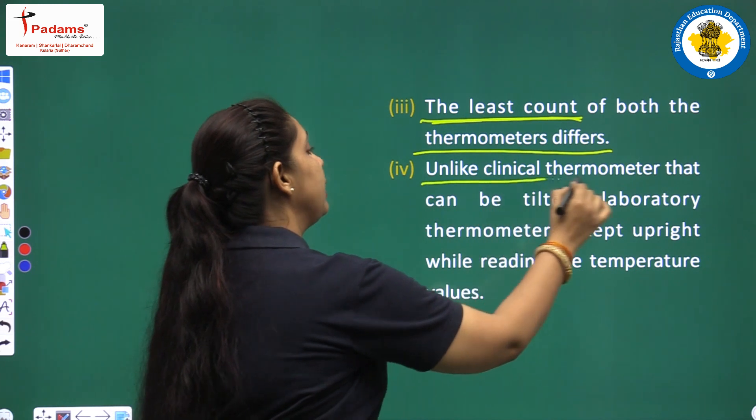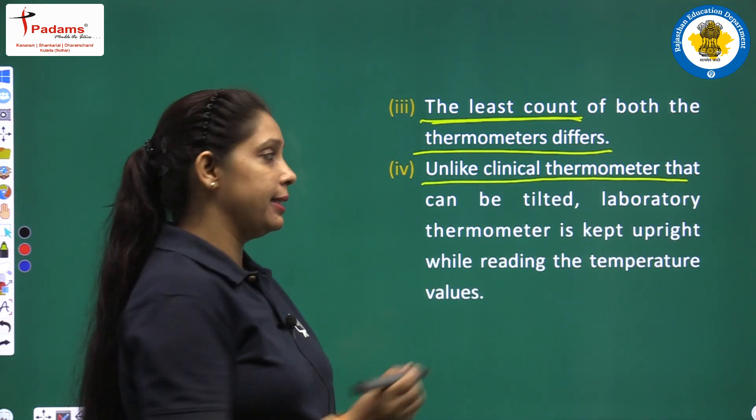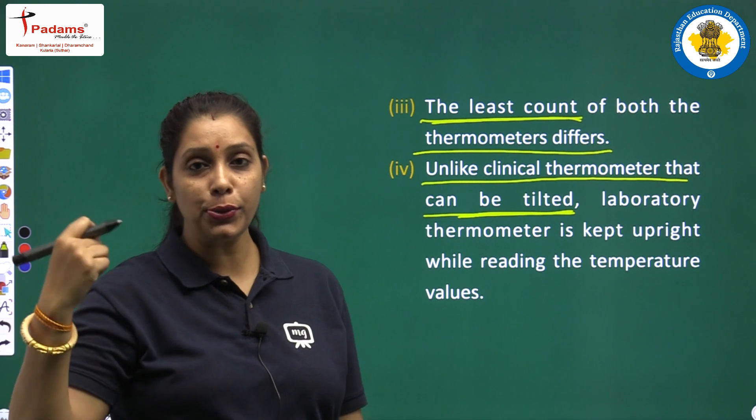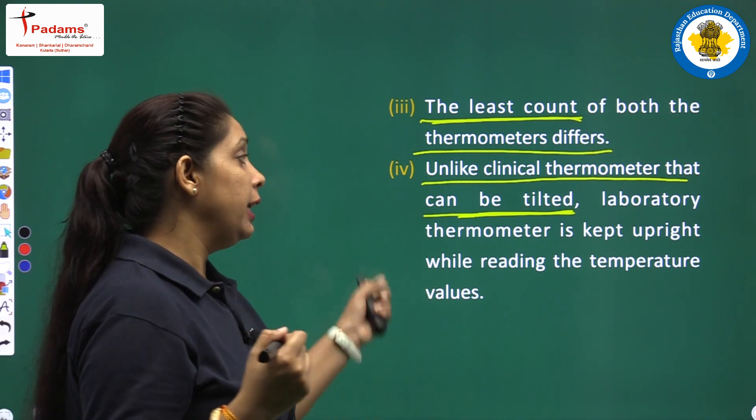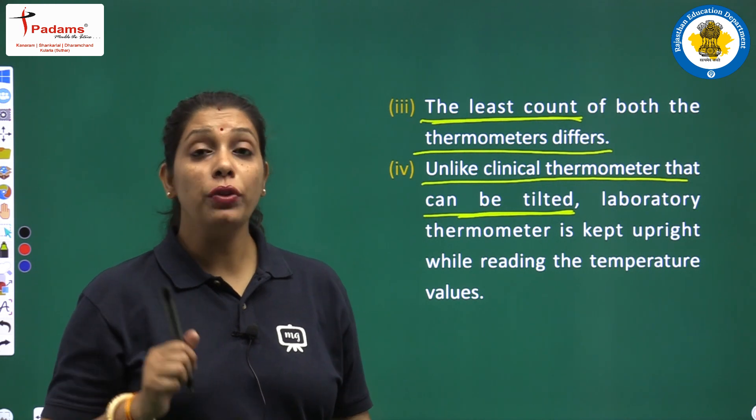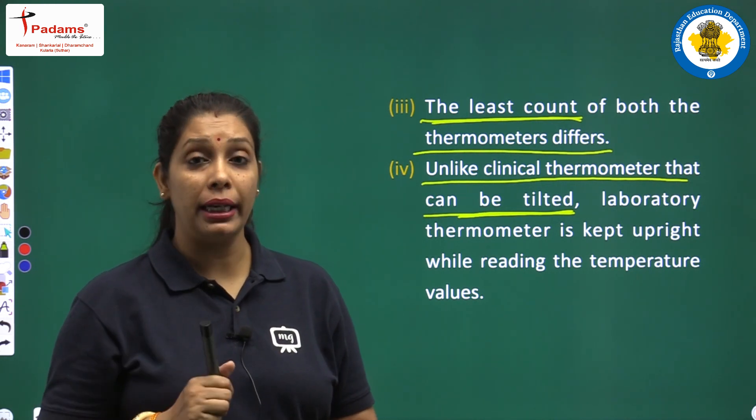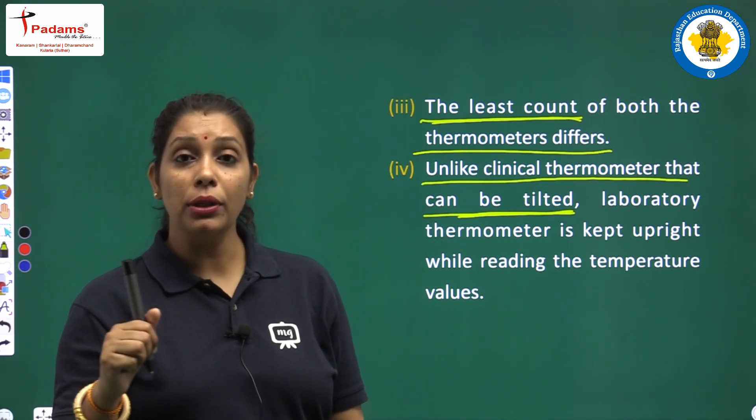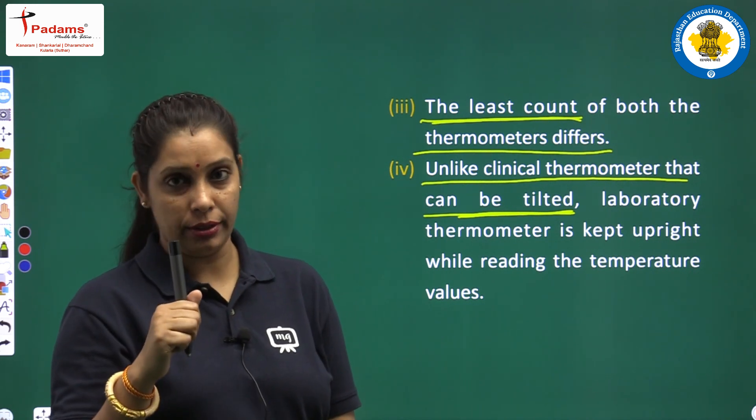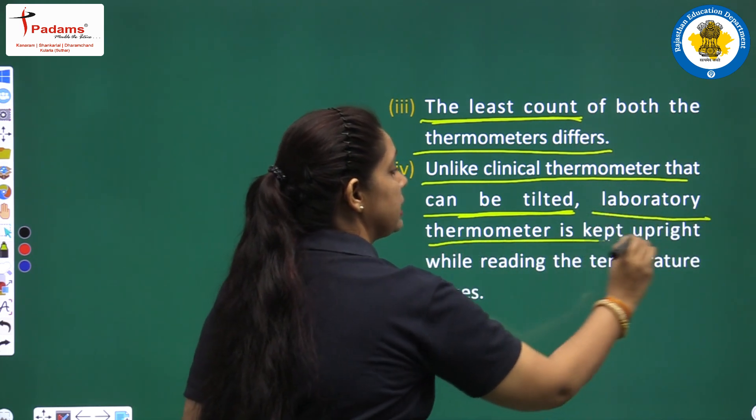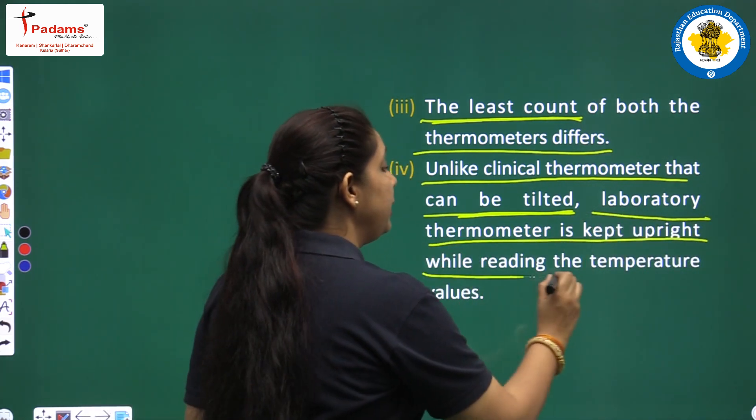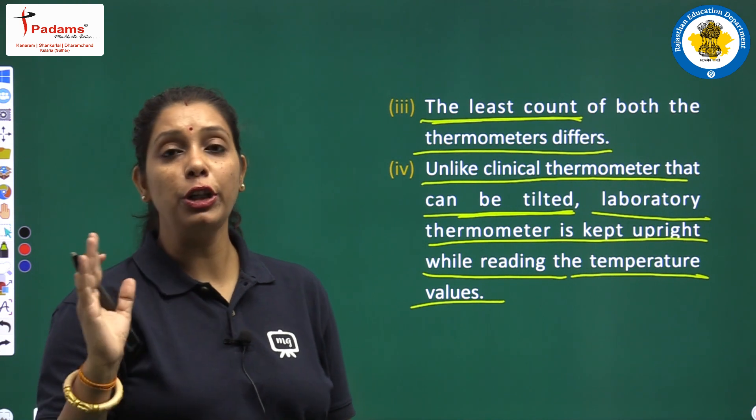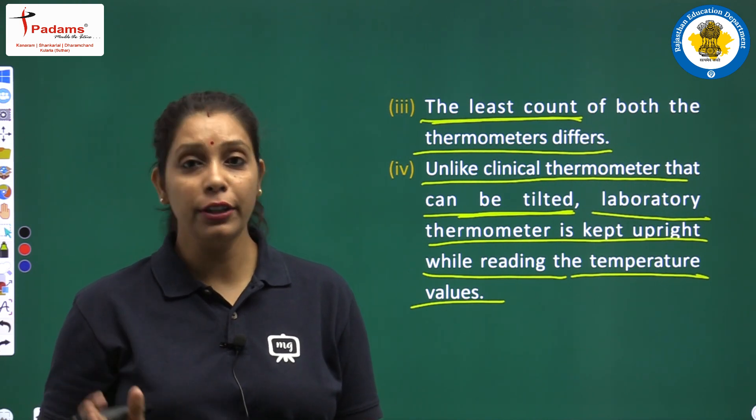The next one: unlike clinical thermometer that can be tilted. In clinical thermometer, for measurement of temperature, to see the values, we can tilt it. But in laboratory thermometer, we always have to keep the thermometer upright. It should be surrounded with that particular substance whose temperature we have to measure. So we have to write laboratory thermometer is kept upright while reading the temperature values.